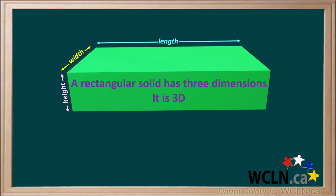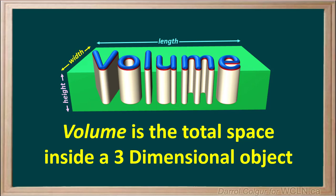Because it has three dimensions, we call it 3D. Volume is the total space inside a three-dimensional object.